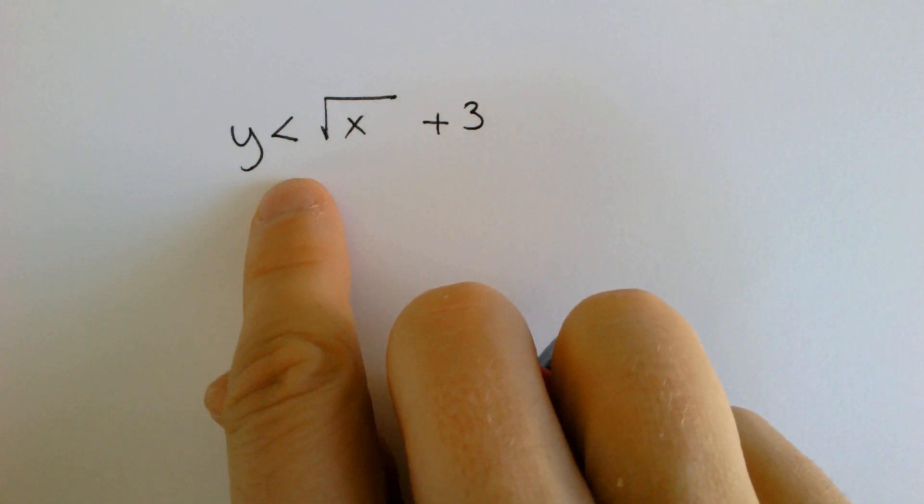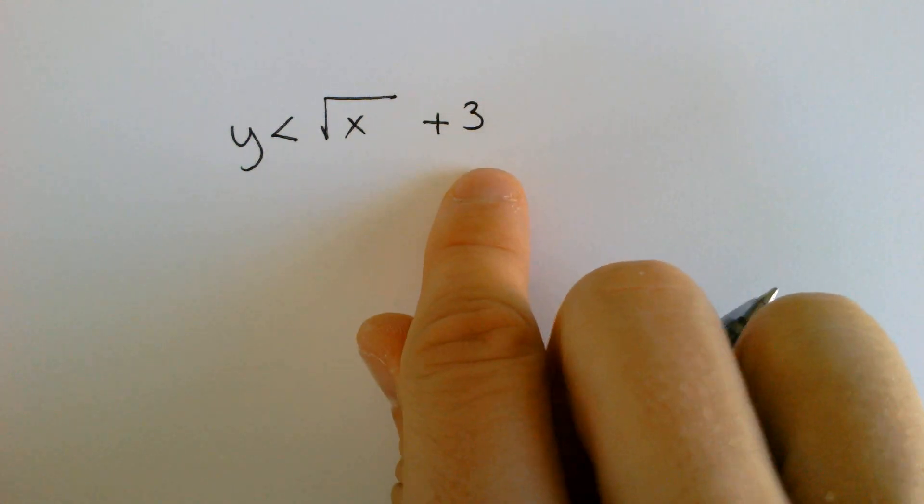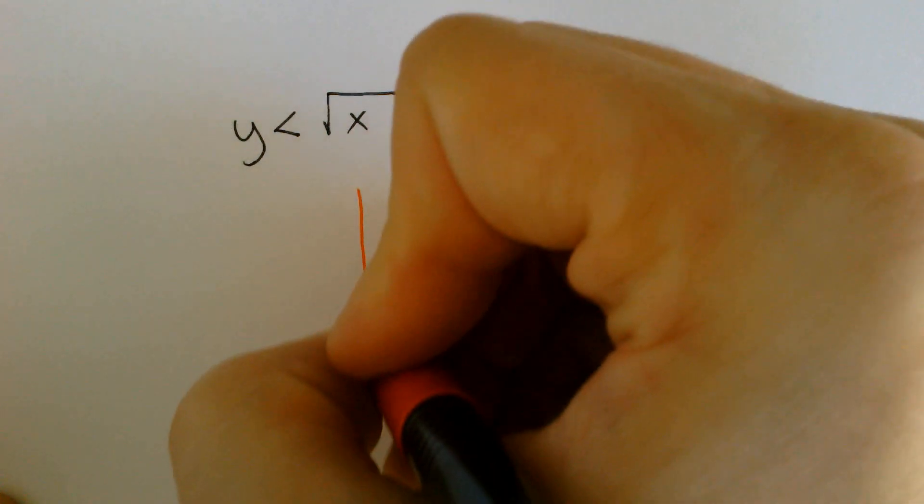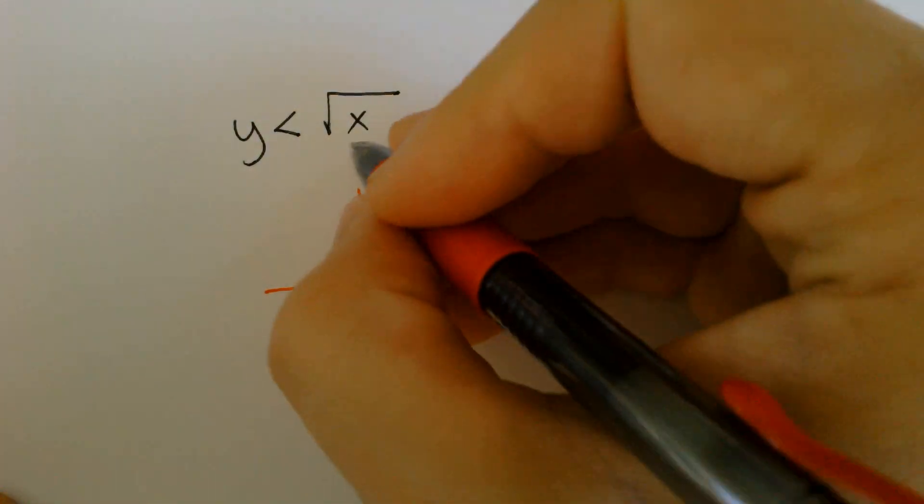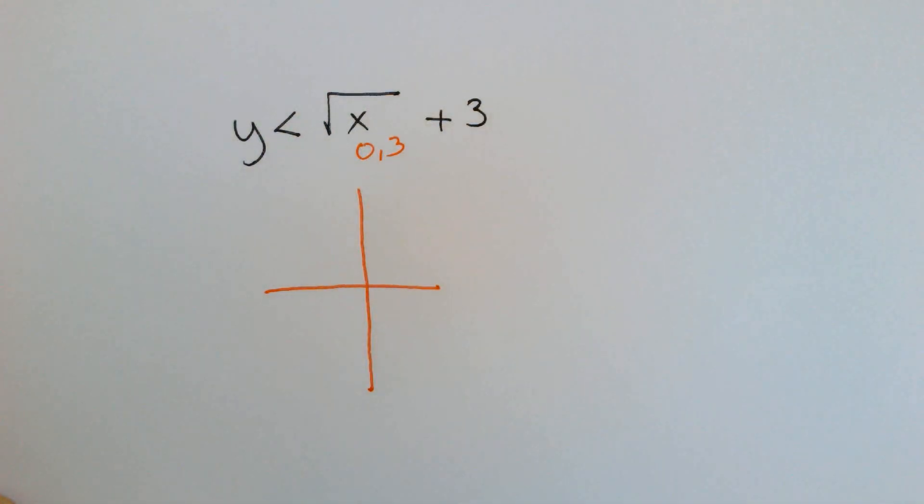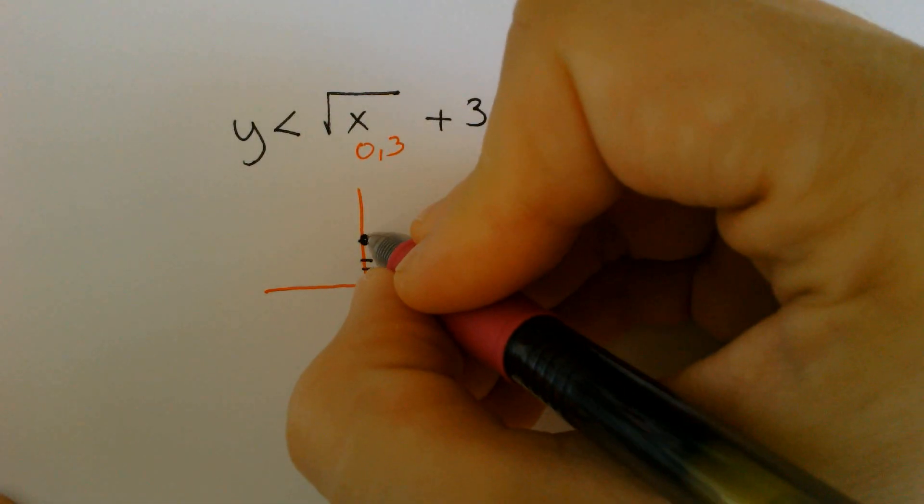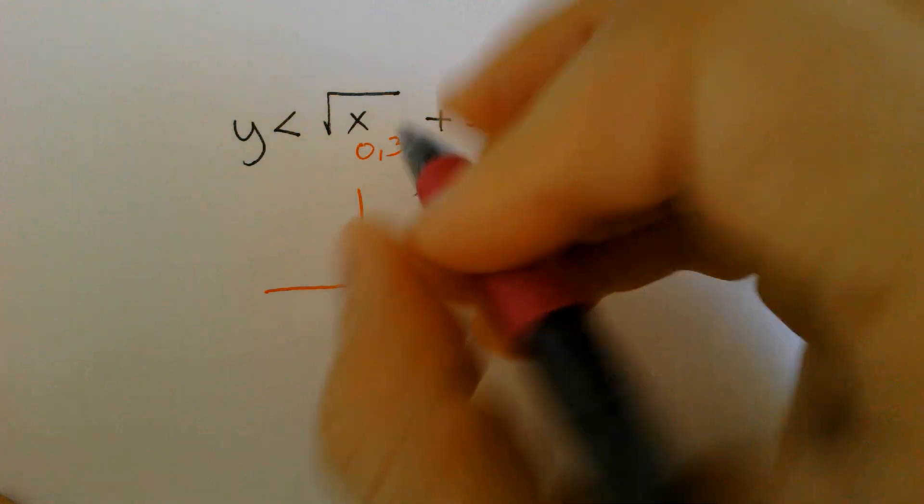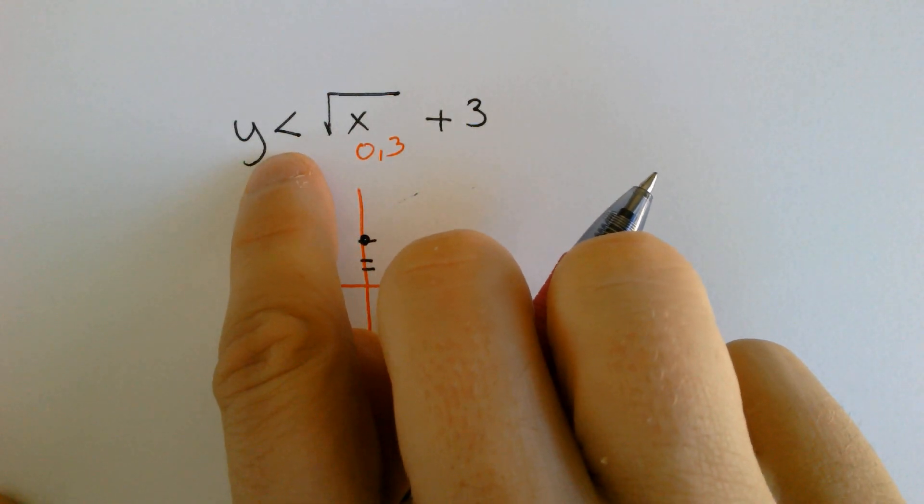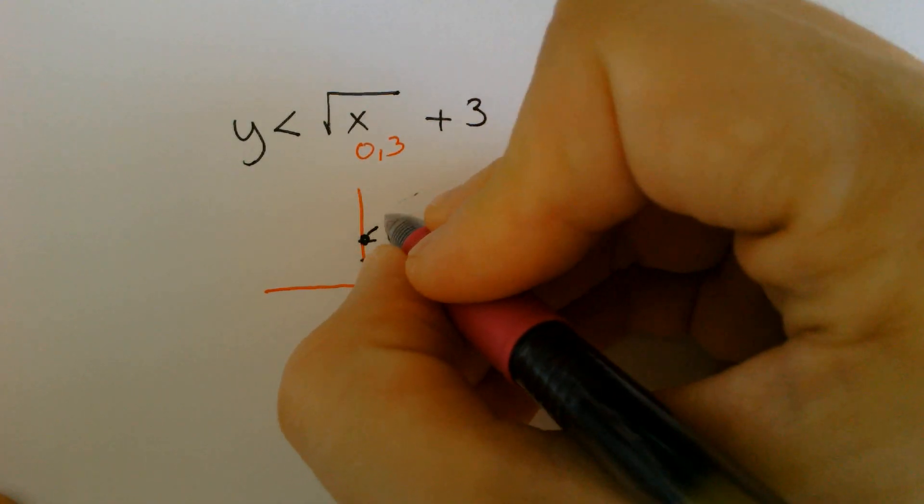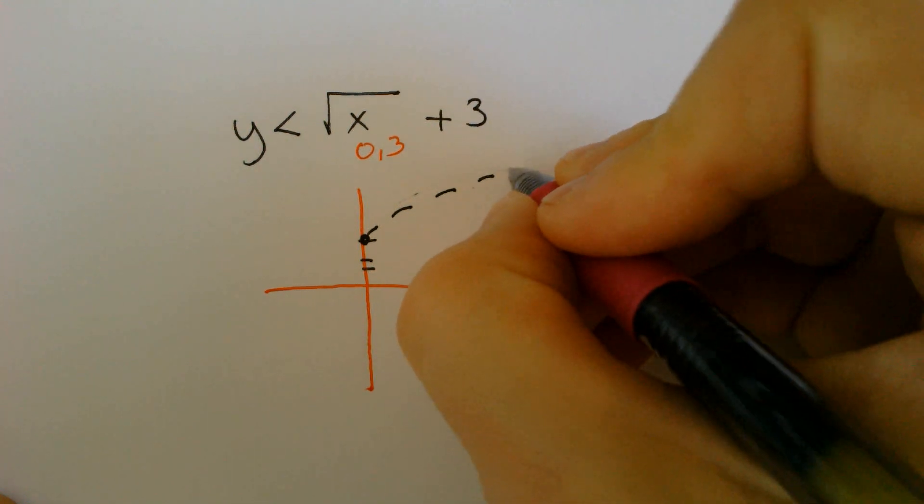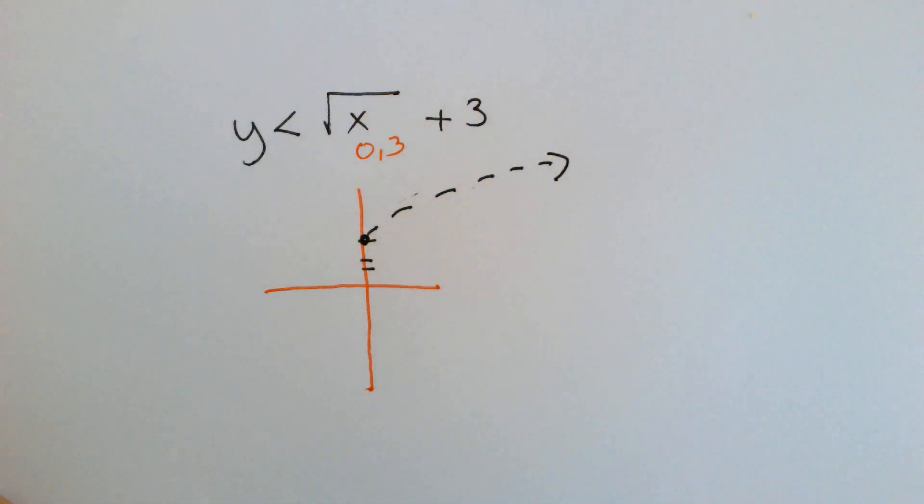Let's say we have y is less than the square root of x plus 3. It would have a vertex of 0 positive 3, so it would be up here at 3 and it would be curving up. Before I curve up, because this does not have an equal to symbol, it is going to need to be a dotted line.